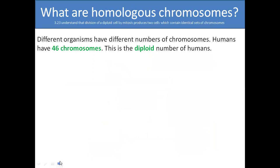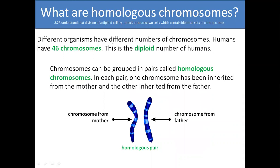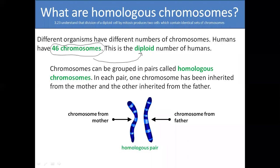What are homologous chromosomes? Different organisms have different numbers of chromosomes. Humans have 46 chromosomes in their somatic cells — somatic cells meaning body cells. That contains 46 chromosomes, which is the diploid number, meaning a double set of chromosomes. In these 46 chromosomes, chromosome 1 comes from the father and chromosome 1 comes from the mother; chromosome 2 from mother, chromosome 2 from father, and so on up to 23. So there are 23 pairs of chromosomes, giving 46 total.